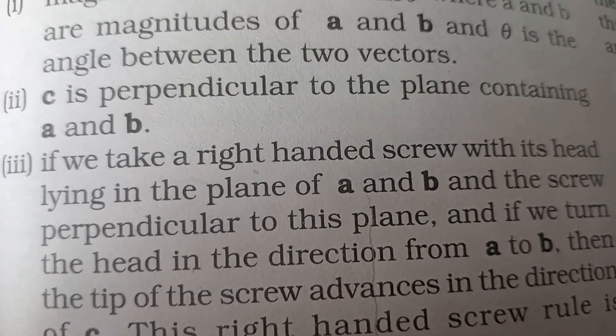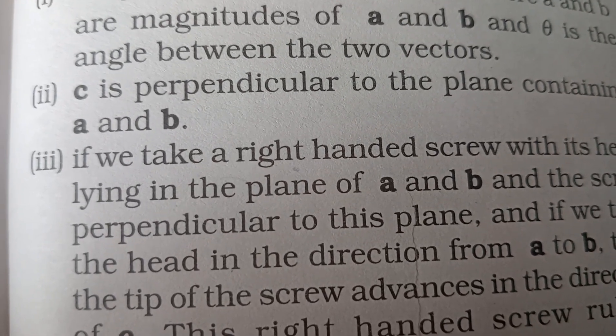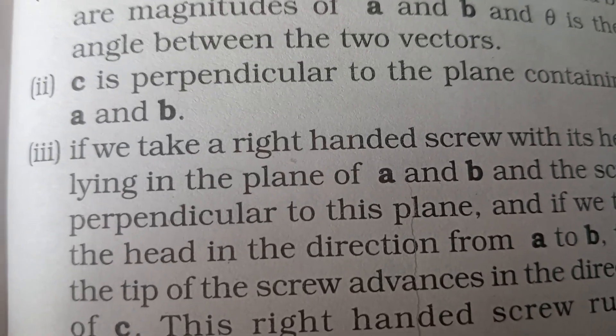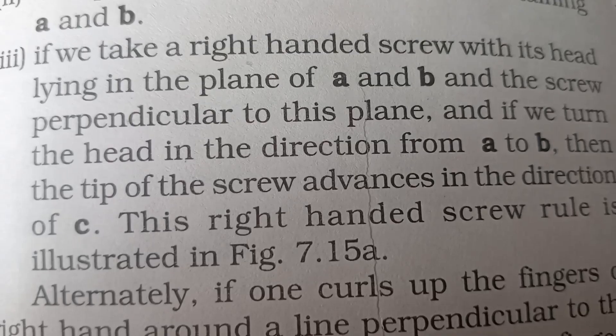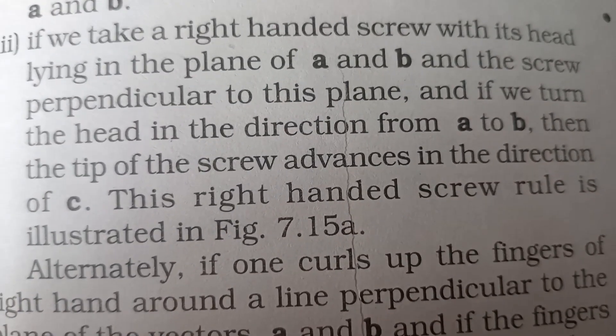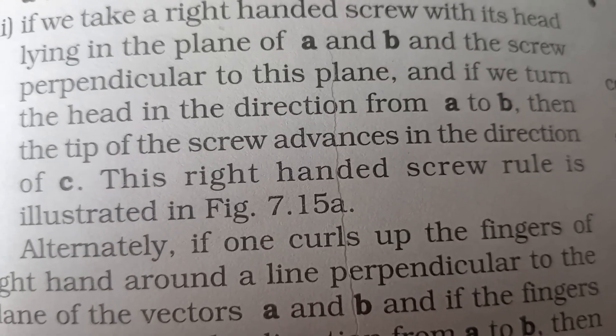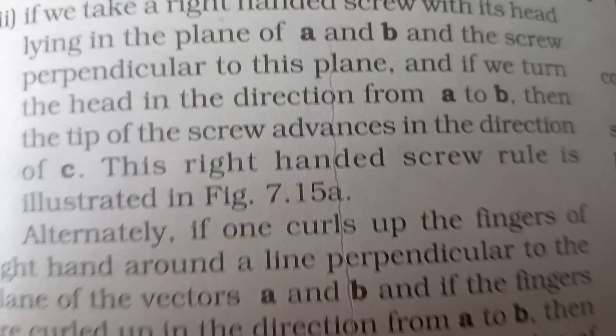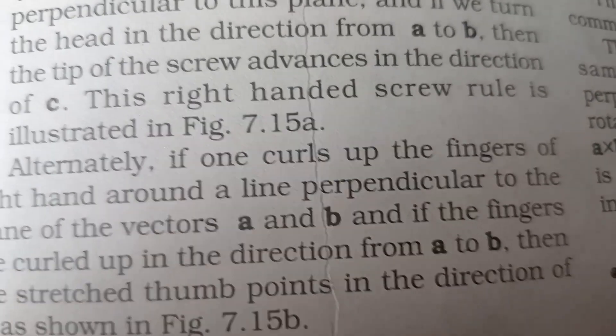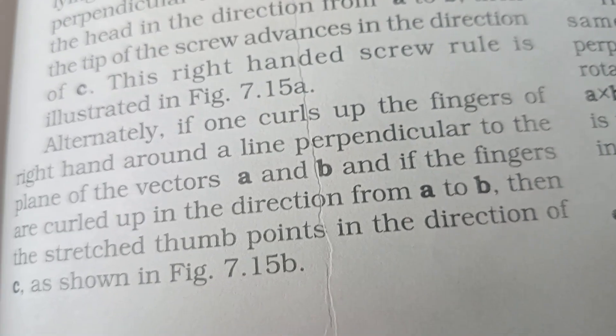C is perpendicular to the plane containing A and B. The resultant vector will be perpendicular to the two vectors. If we take a right-handed screw with its head lying in the plane of A and B, and the screw perpendicular to this plane, and if we turn the head in the direction from A to B, then the tip of the screw advances in the direction of C.